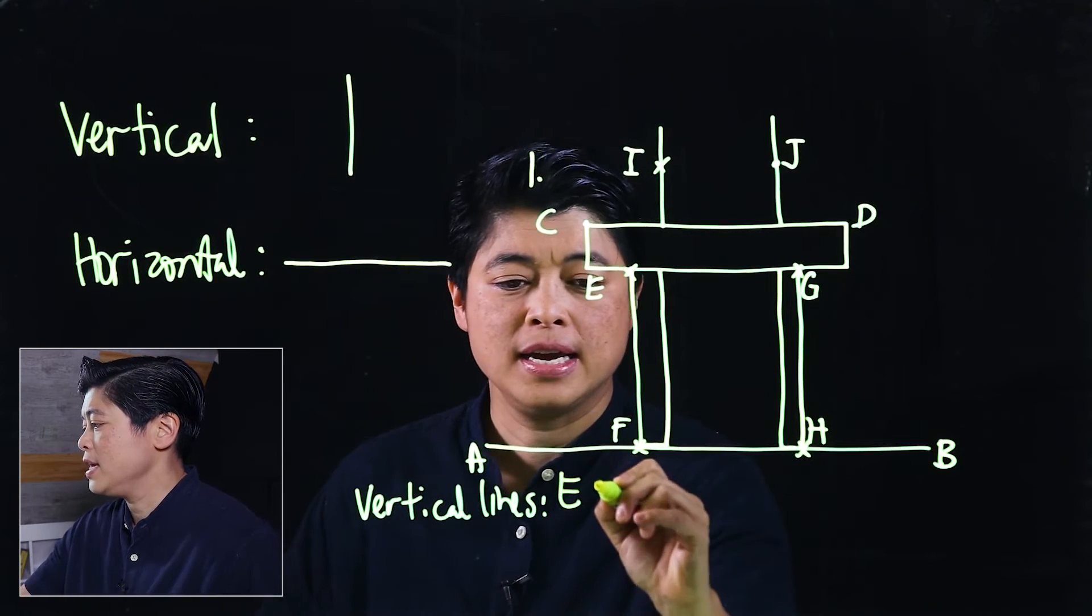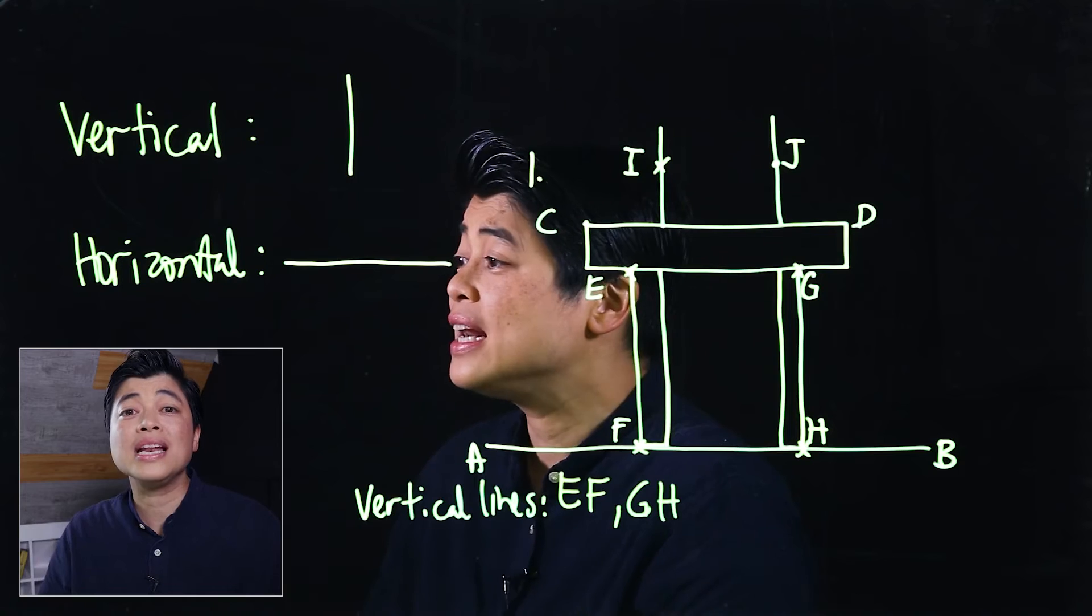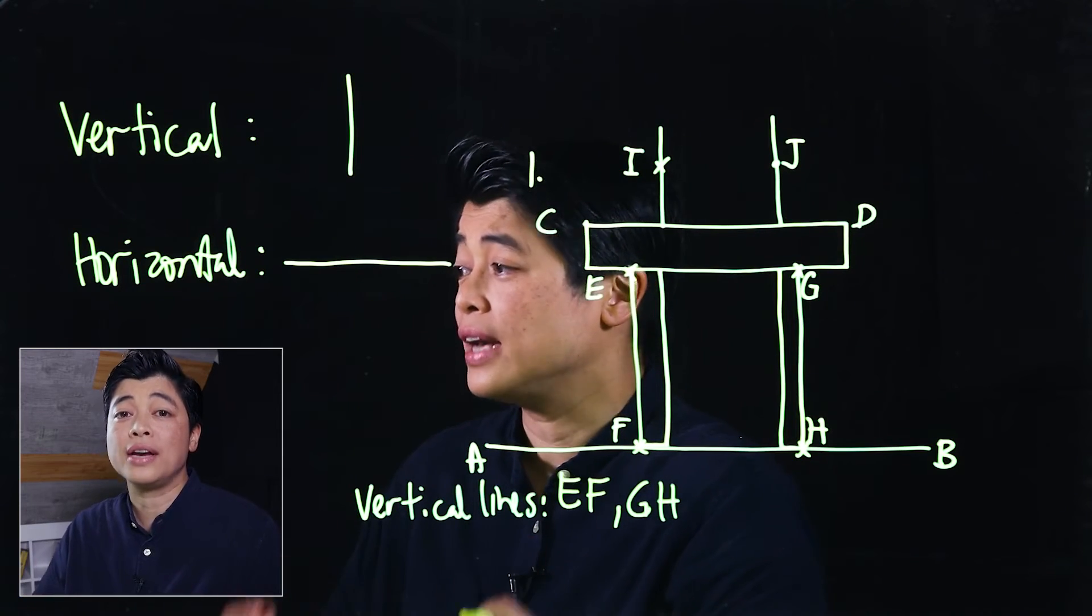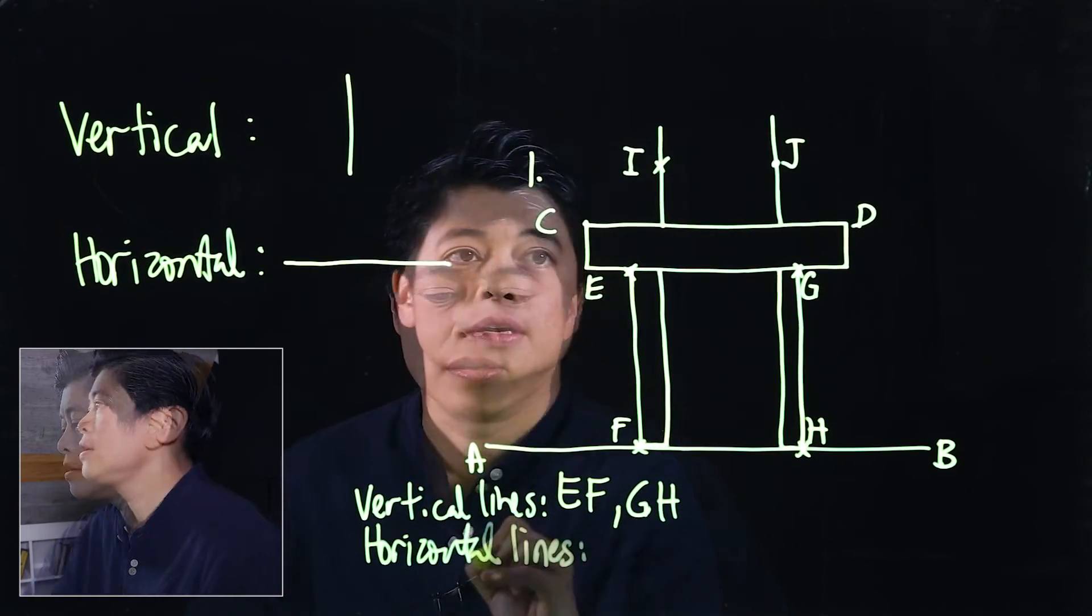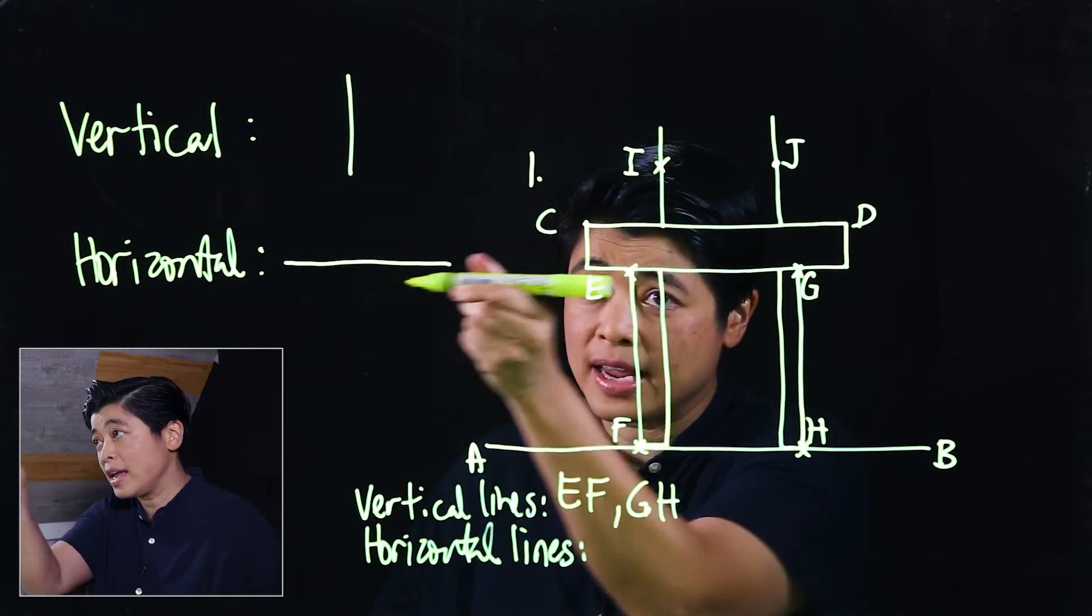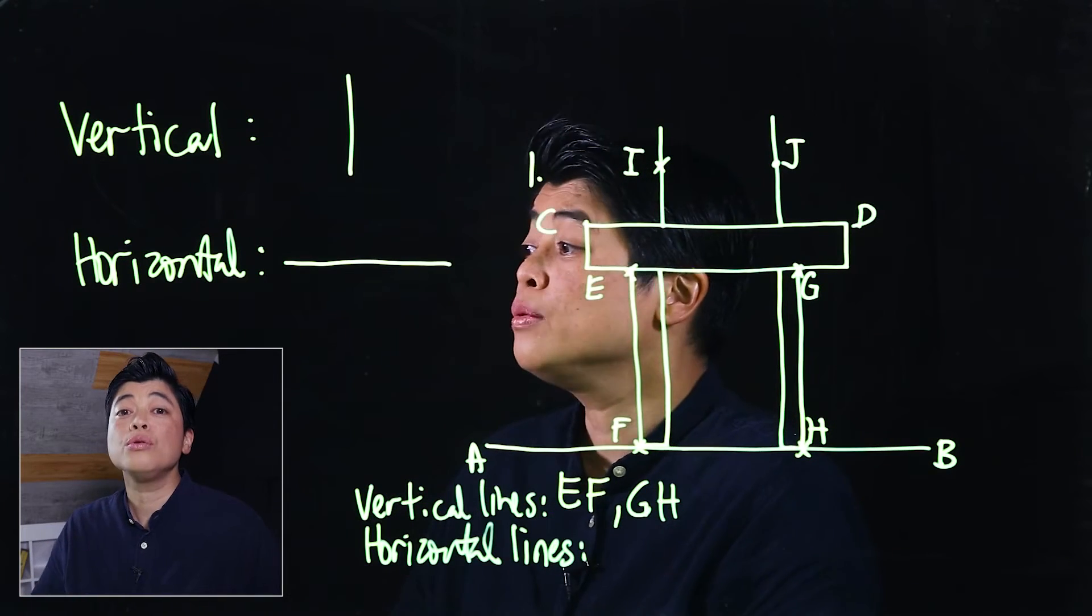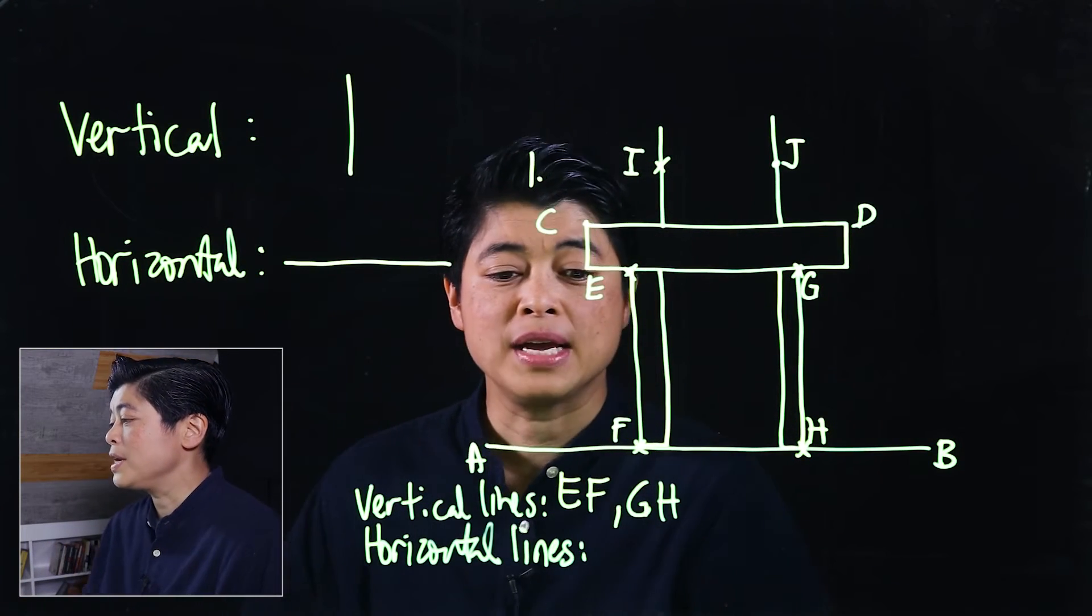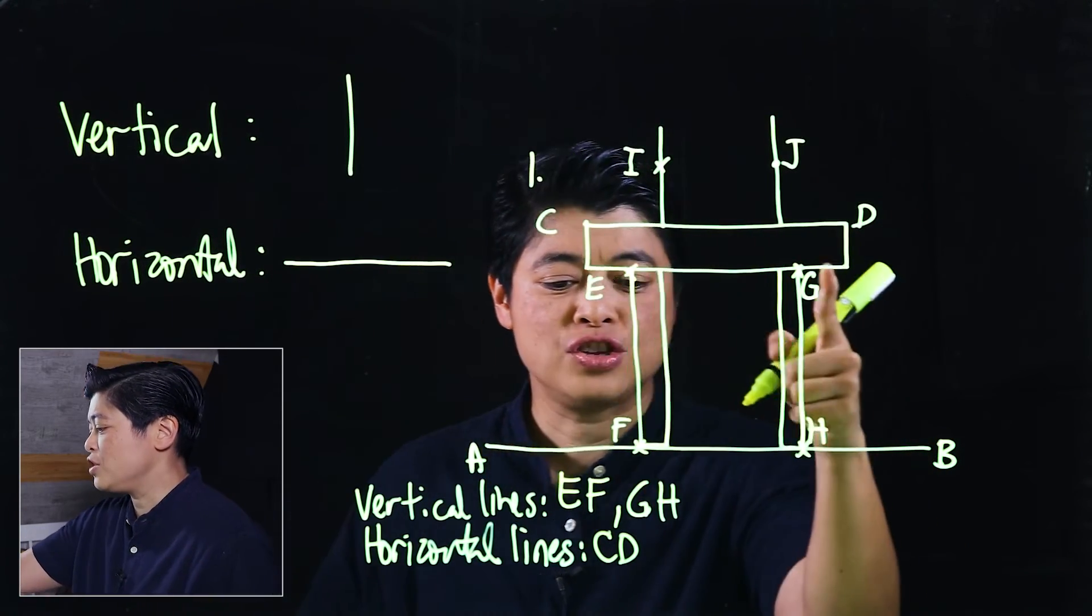The horizontal lines are the ones that are lying across. Again, these need to be connected by two points, which means we have CD as a horizontal line, we have EG as a horizontal line, we have FH as a horizontal line, and we also have AB as a horizontal line.